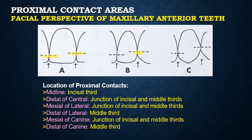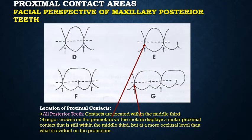The distal side of the canine contacts the first premolar in the middle third. That was an overview of the contact areas of anterior teeth. Now moving to the proximal contact areas of maxillary posterior teeth.